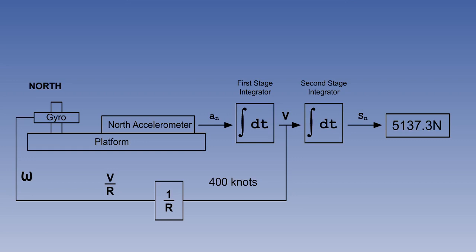Taking the second stage integrator as an example, suppose the velocity input were exactly 400 knots for exactly one hour. If the distance gone output to the present position display were 401 nautical miles instead of 400, that would be an integrator scaling error. Integrator error can be present in both the first stage and the second stage integrators.